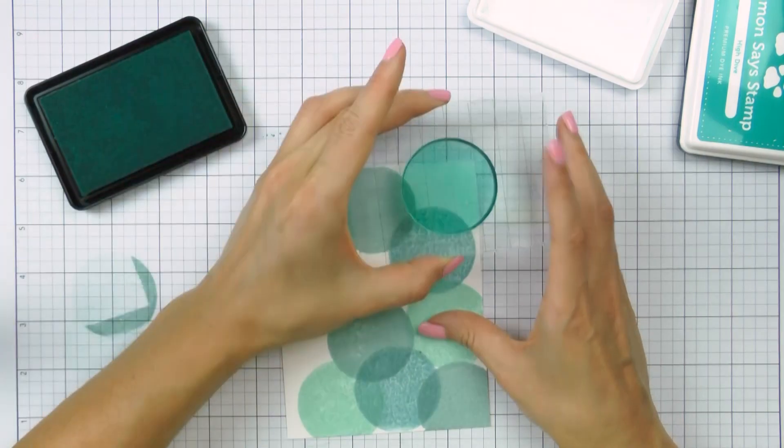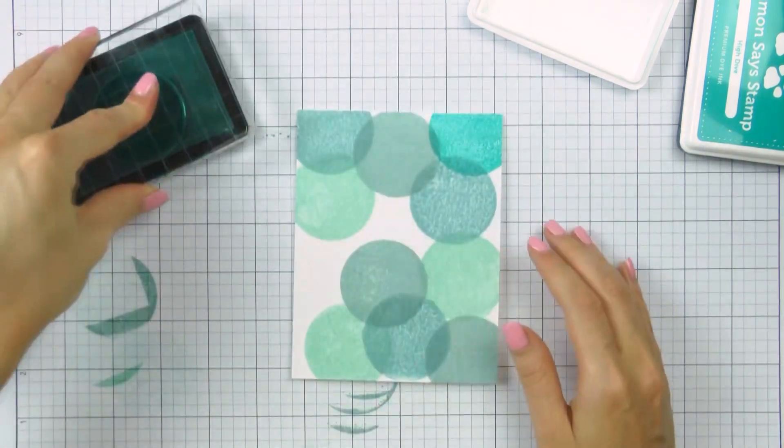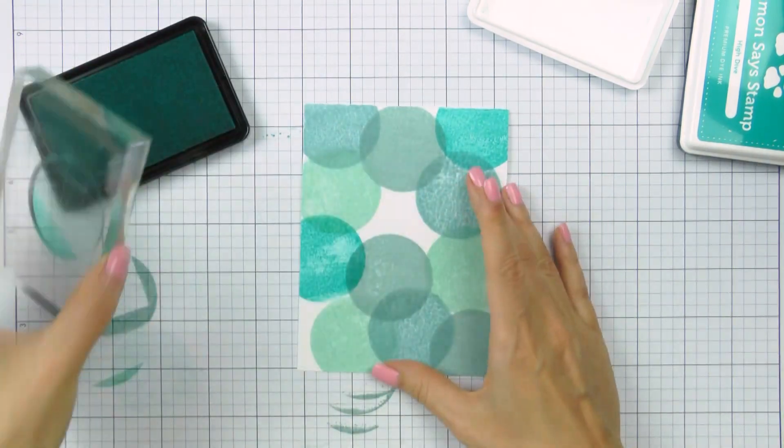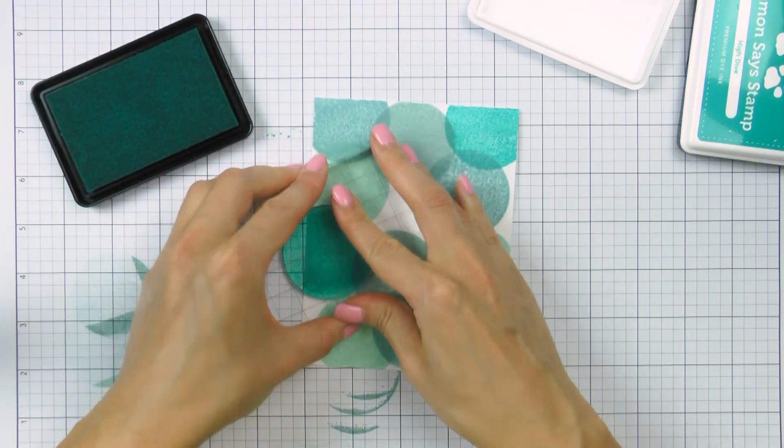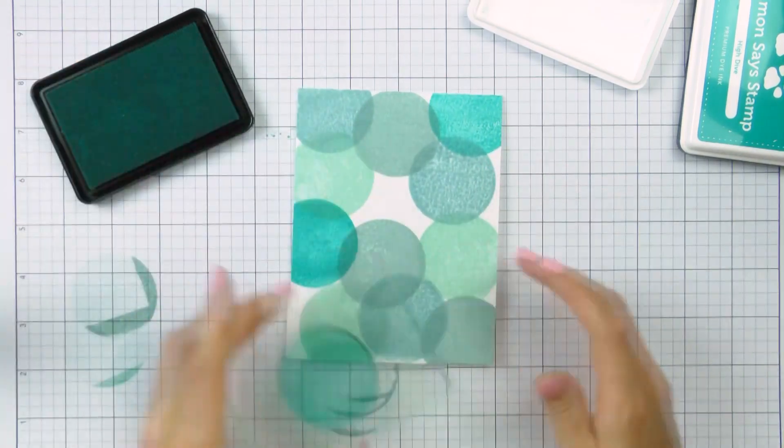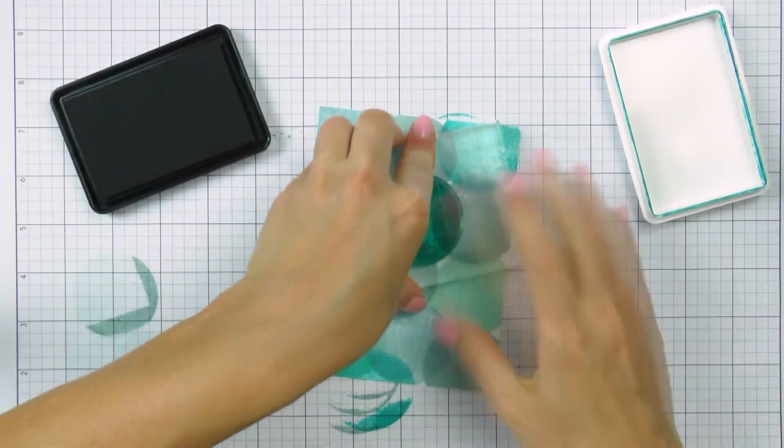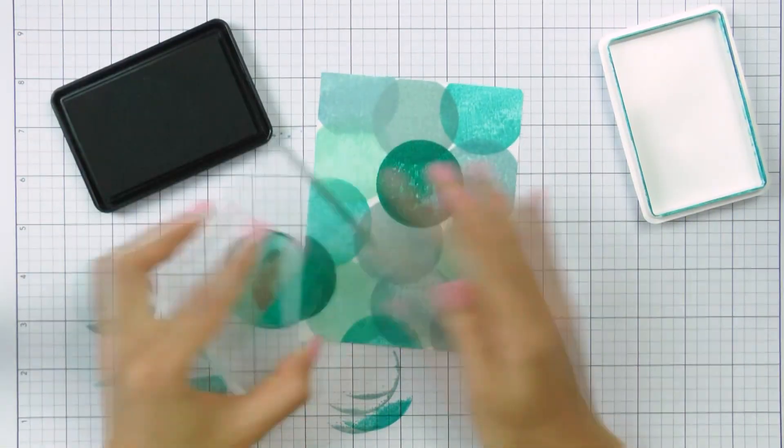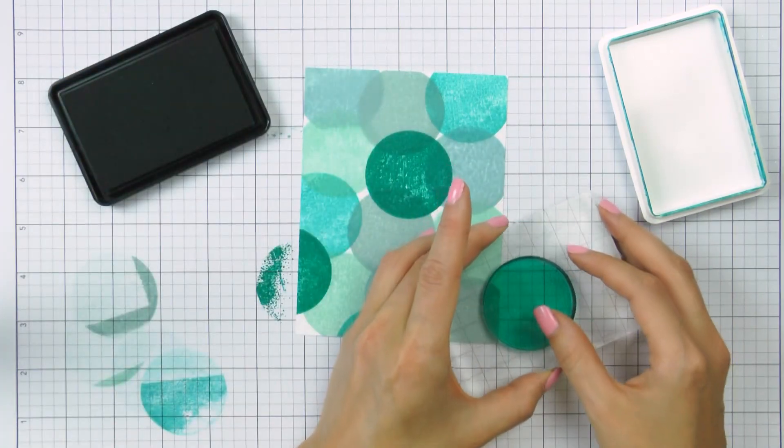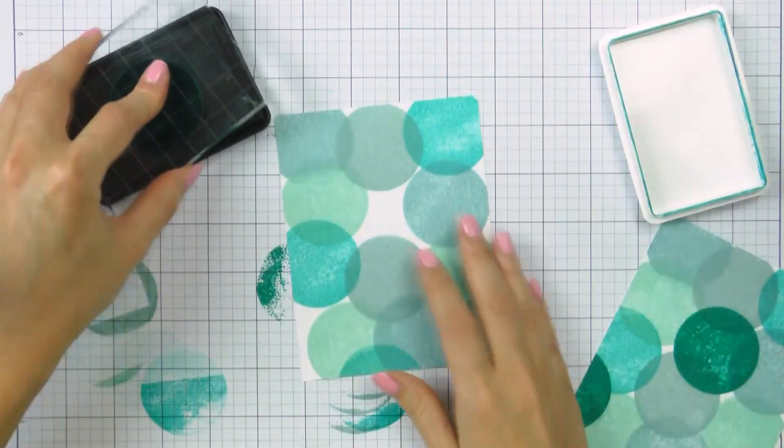As I'm stamping I'm making sure to overlap my circles. I'm overlapping some just a little bit and others a lot. I'm also not trying to cover every bit of white with my stamping. I do not mind having some white background showing through my stamping. I'm also not stamping a pattern, I'm trying to have this appear rather random.